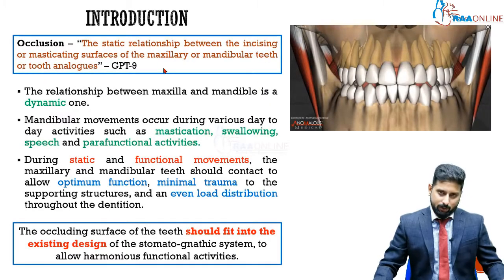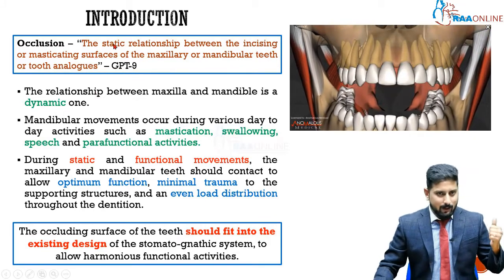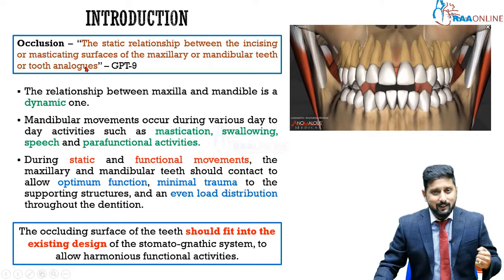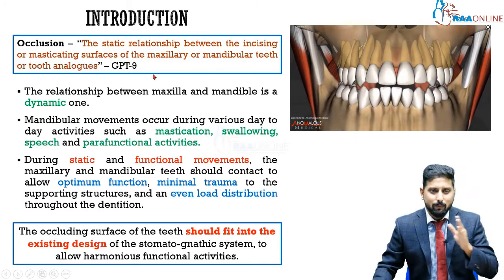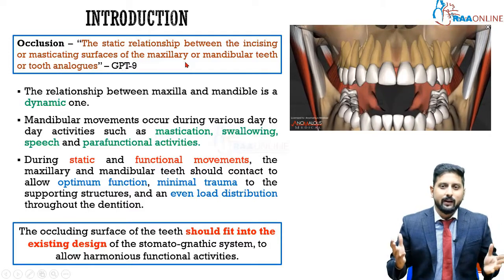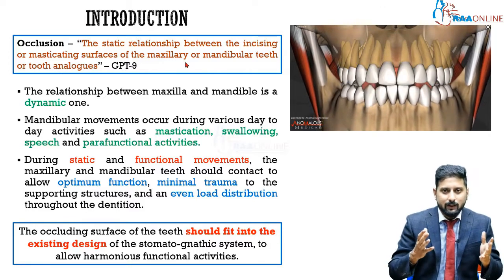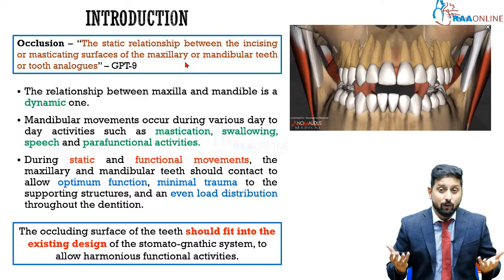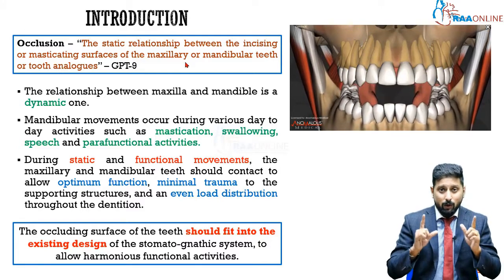What do we mean by occlusion? As the Glossary of Prosthodontic Terms states, it is the static relationship between the incising or masticating surfaces of maxillary or mandibular teeth or tooth analogs. Simply put, when you bite or clench your teeth, the relationship between the upper and lower teeth is called occlusion — it is a static relationship at a single point.